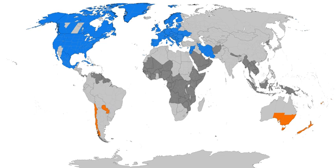Germany led the way by starting DST during World War I on April 30, 1916, together with its allies, to alleviate hardships from wartime coal shortages and air raid blackouts. The United Kingdom used DST first on May 21, 1916. U.S. retailing and manufacturing interests led by Pittsburgh industrialist Robert Garland soon began lobbying for DST, but they were opposed by railroads. The U.S.'s 1917 entry to the war overcame objections, and DST was established in 1918. The war's end swung the pendulum back, and farmers continued to dislike DST. Many countries repealed it after the war, like Germany itself, which dropped DST from 1919 to 1939 and from 1950 to 1979.